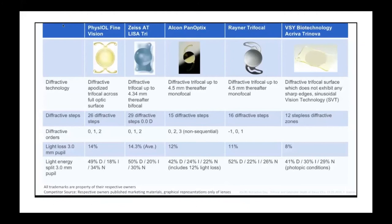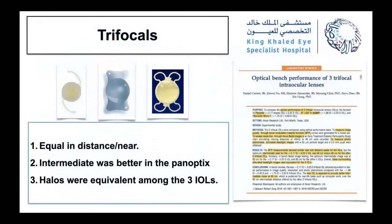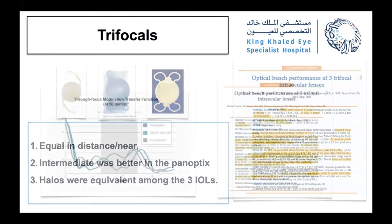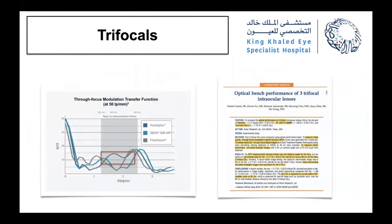We have many trifocals — nearly every ophthalmic company has one — but three are very popular: the Panoptix, the Zeiss AT LISA trifocal, and the PhysIOL FineVision trifocal. In a comparative study, all three provided equal near and distance vision with a good level of spectacle independence. However, intermediate vision was slightly better with the Panoptix at 60 centimeters. Halos were equivalent among all three. The Panoptix focus curve performed better at intermediate, making it a good option for patients seeking computer independence.